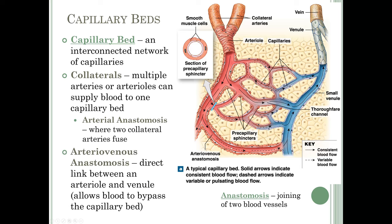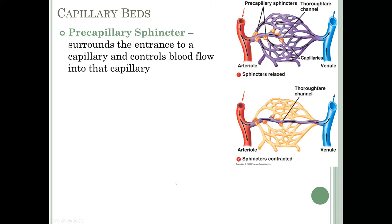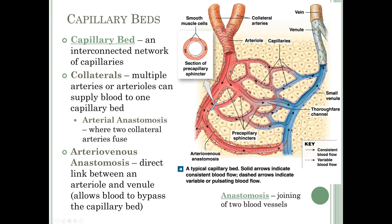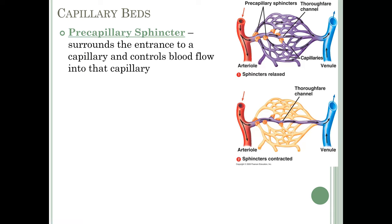You can also have an arteriovenous anastomosis — connecting an arteriole and a venule — which is a direct link allowing blood to completely bypass the capillary bed. Control of arteriovenous anastomoses is usually controlled by the autonomic nervous system. Precapillary sphincters are contractile smooth muscle cells surrounding the entrance to a capillary. When they constrict, they block flow into that capillary. The top shows sphincters relaxed; the bottom shows them contracted, with blood passing straight through without going into the capillary network.